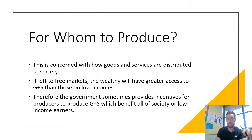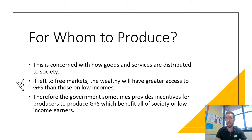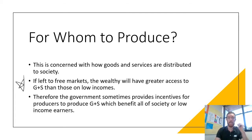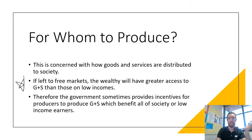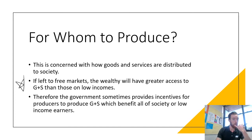For whom to produce is concerned with how goods and services are distributed to society. If it was left entirely to free markets, the wealthy would have far greater access to goods and services than those on low incomes. Therefore, the government sometimes provides incentives to producers to produce goods and services that will benefit all of society or low-income earners. For example, the government subsidises things like immunisation and medication so that low-income households can afford them. Things like insulin, if not subsidised through the PBS, would be very expensive and people who are diabetic might not be able to afford it, making their living standards far worse off.